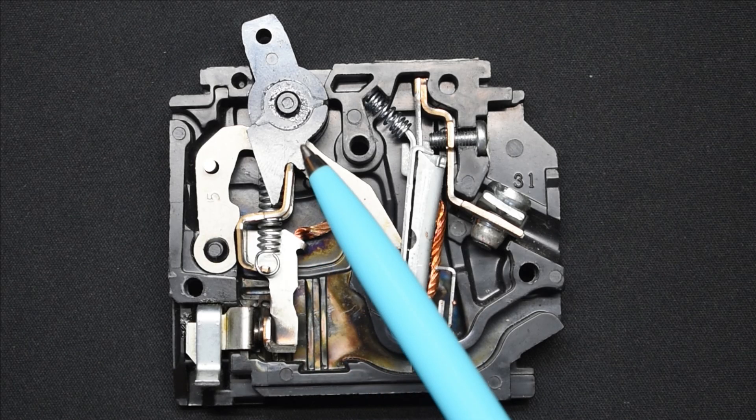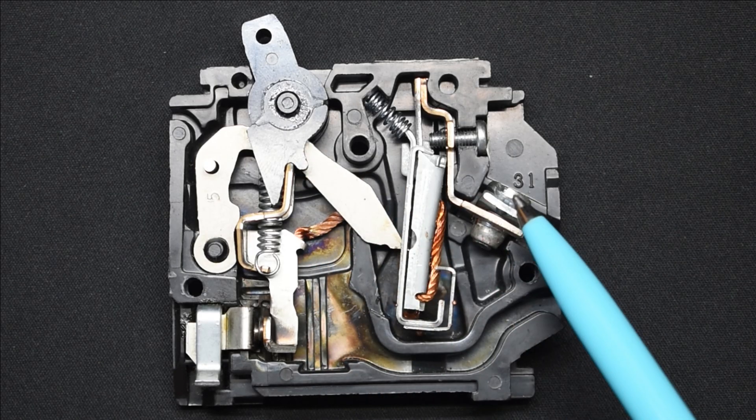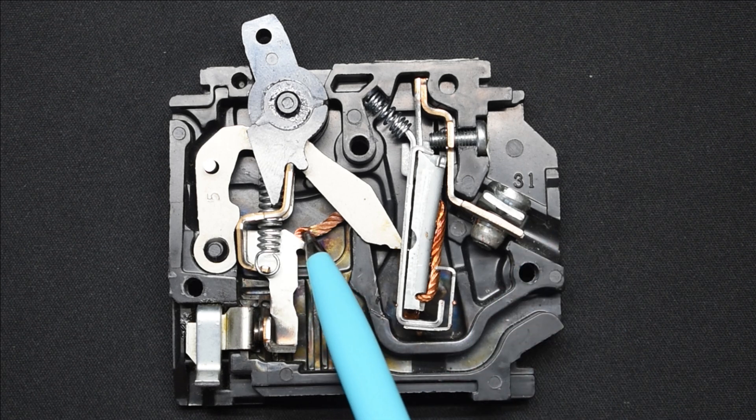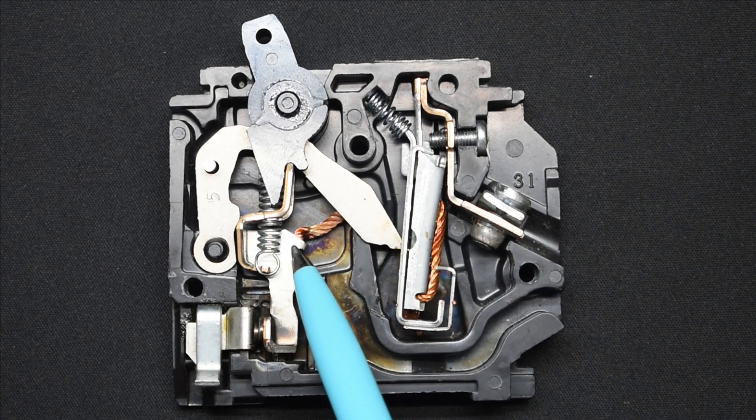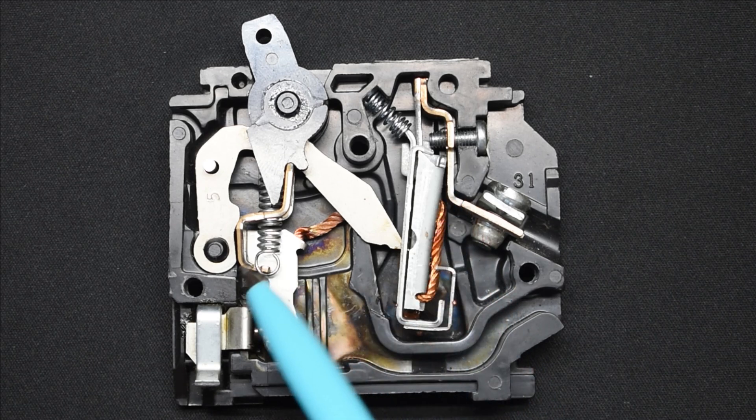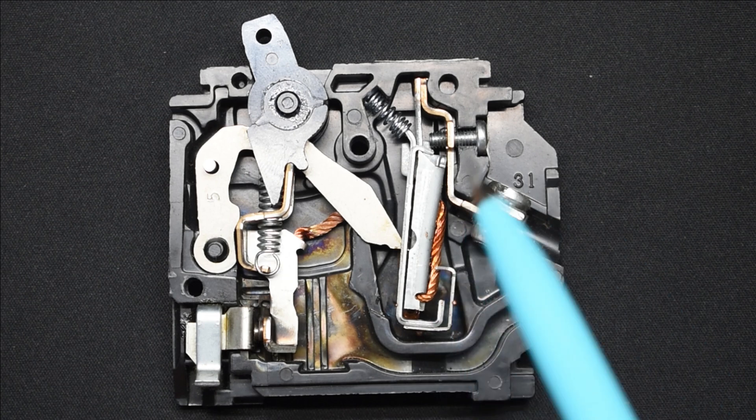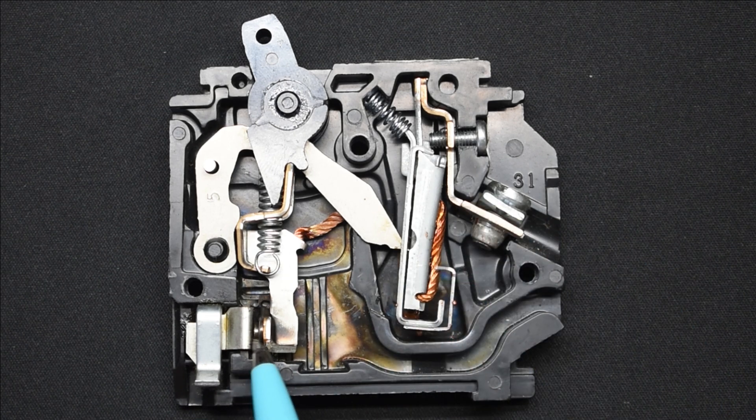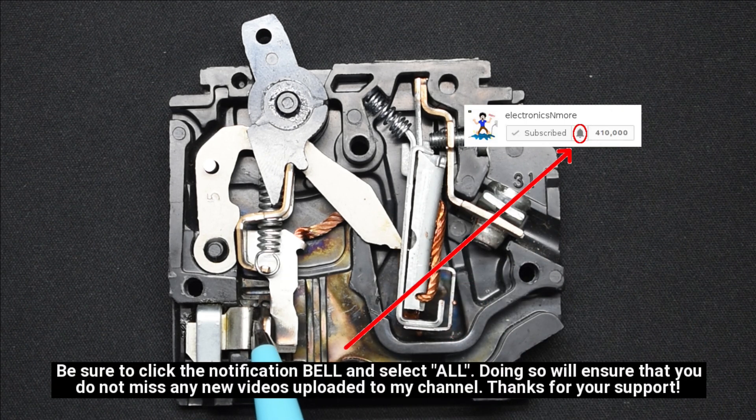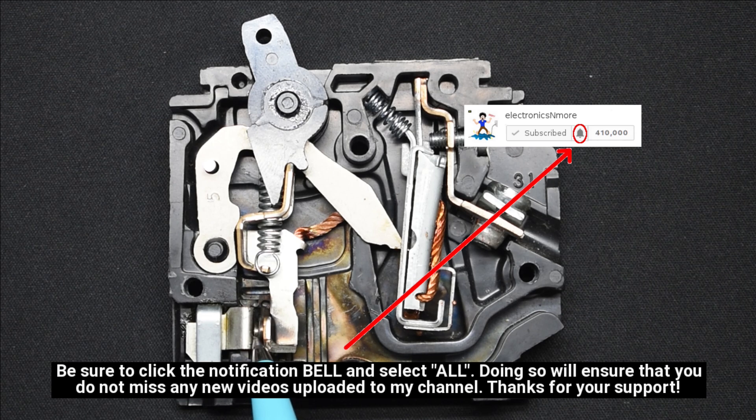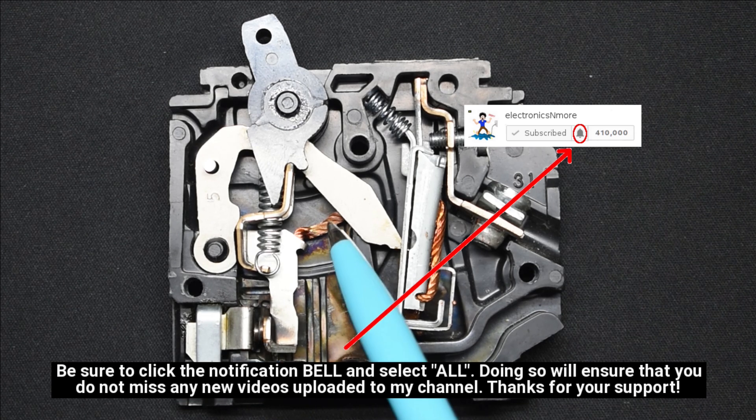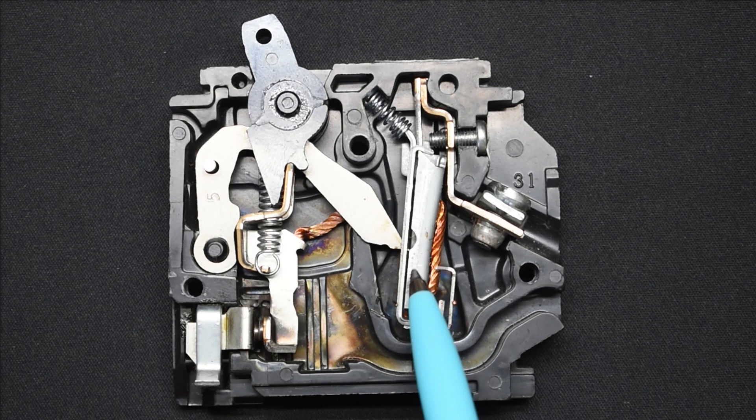So if the circuit breaker's reset to the on position and there's no power to the branch circuit, more than likely you have an opening between this point here and over here, so the circuit is interrupted and current cannot flow through. Or due to arcing between these two contact points, a good connection is no longer being made. So it's either here or between this point and this point.